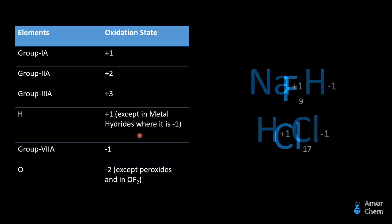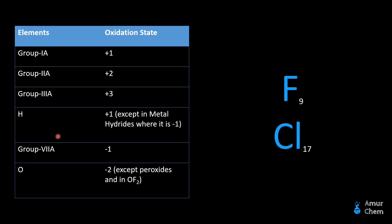The next example is Group 7A. Group 7A elements have an oxidation state of negative 1 — for example, fluorine and chlorine. Both these elements have 7 electrons in their valence shell, so they will gain 1 electron and acquire an oxidation state of negative 1. However, chlorine can exist in many other oxidation states, for example positive 7, but generally it has an oxidation state of negative 1.